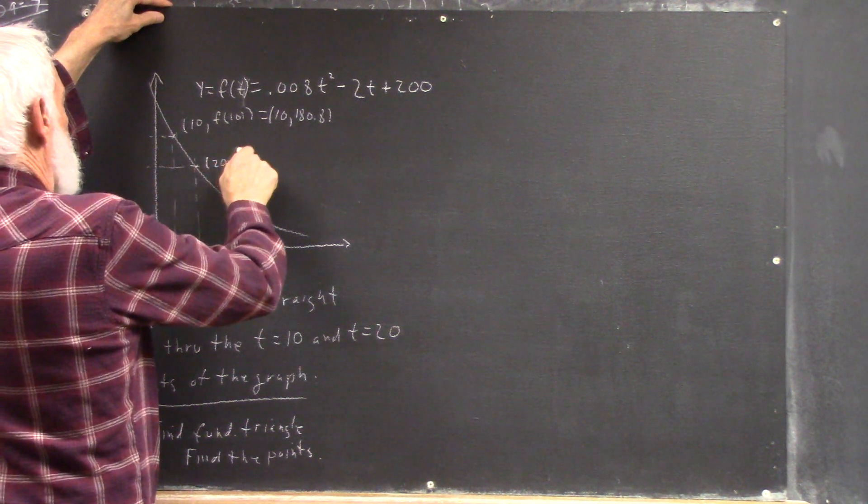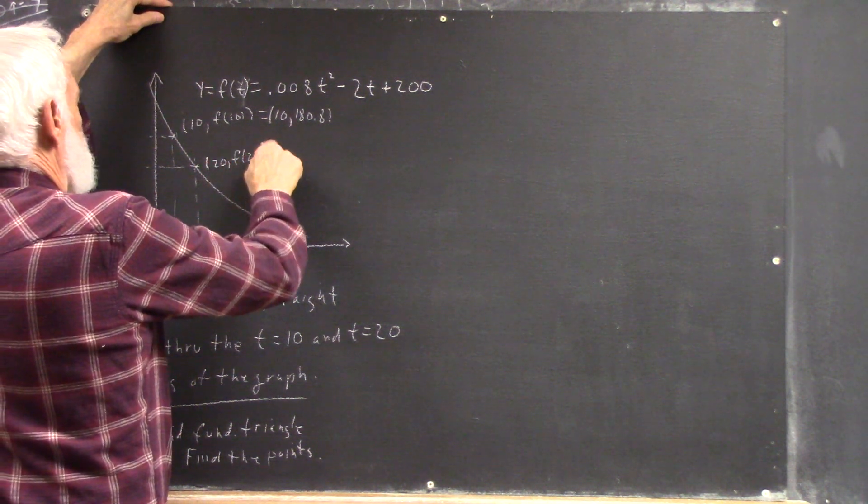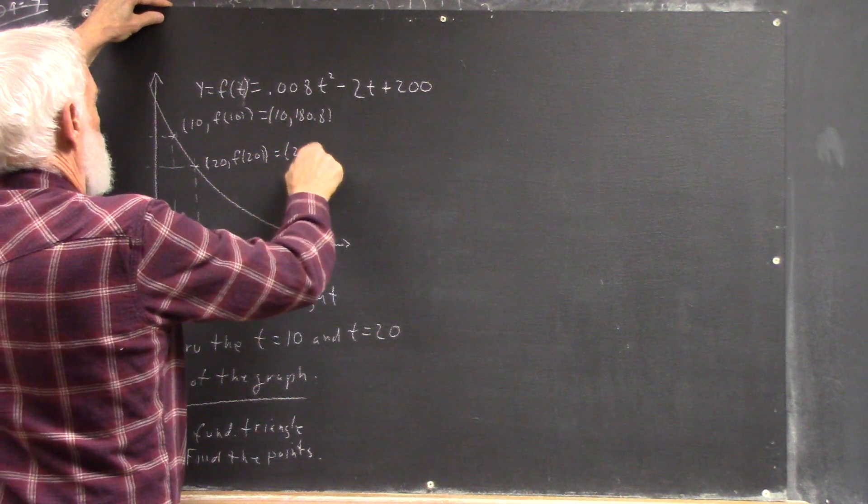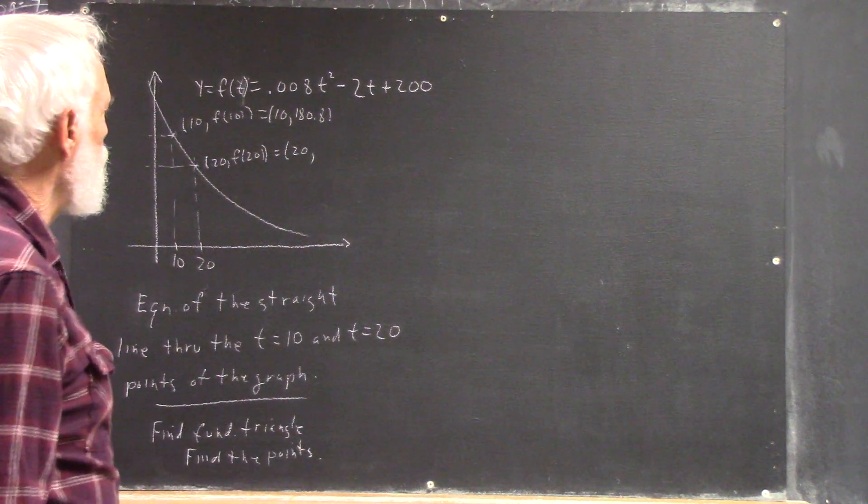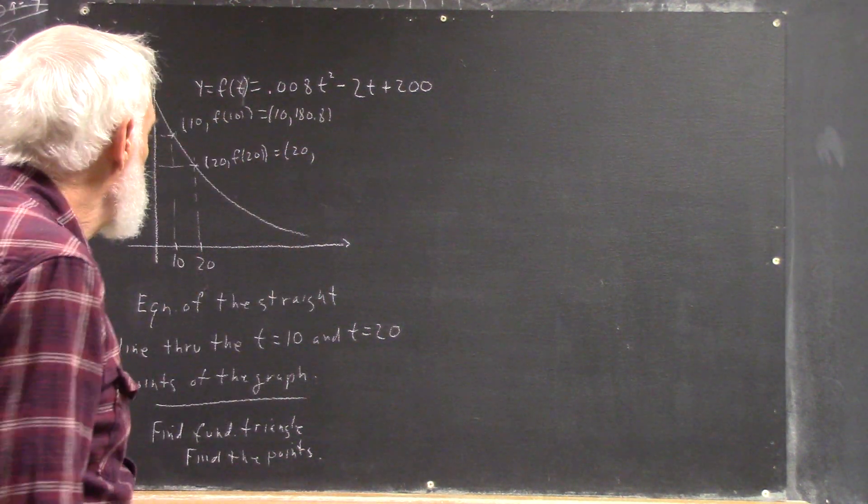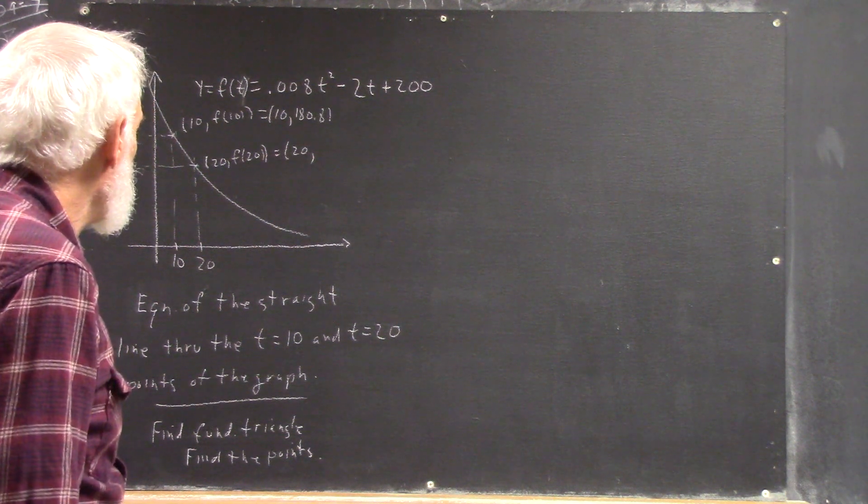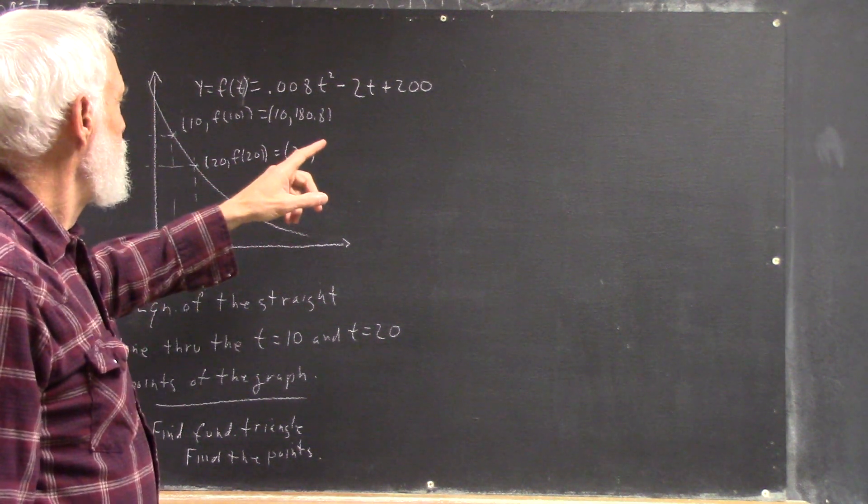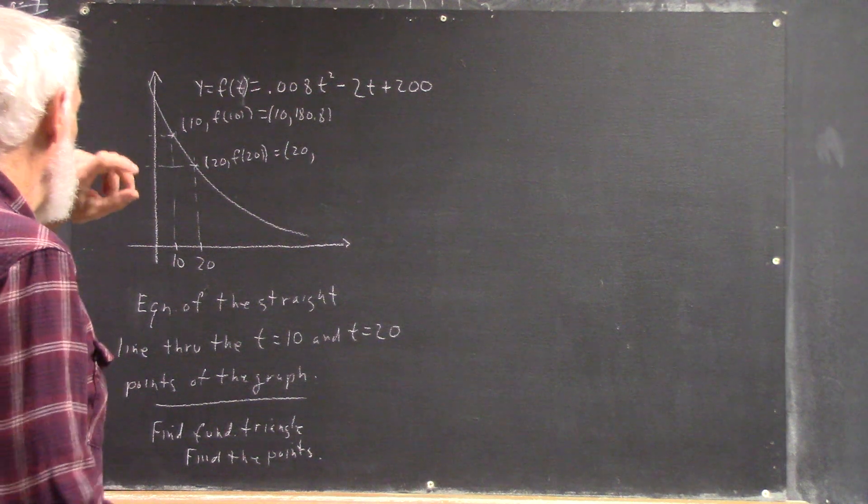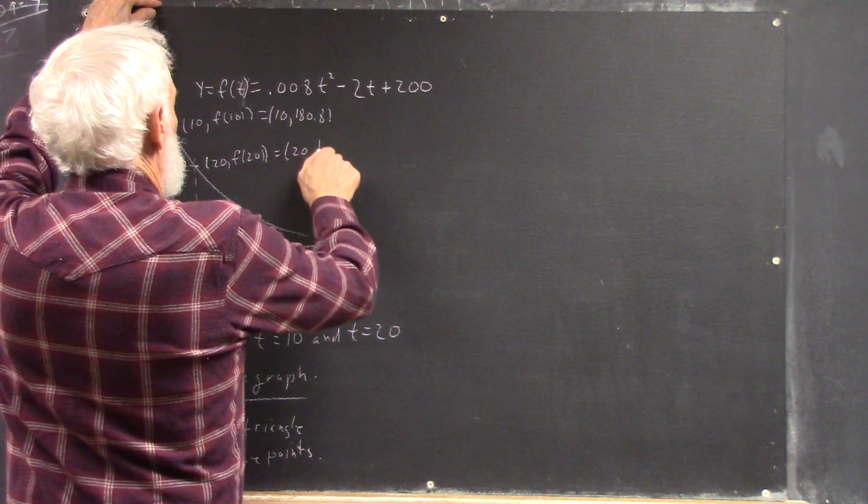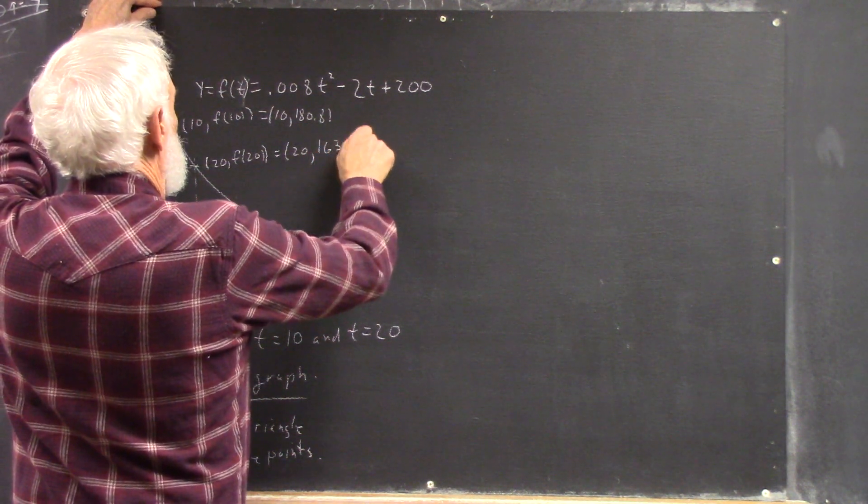And then we have the point (20, f(20)). That's 20. Now, 20 squared is 400. It's going to give us 3.2 minus 40 plus 200. So I believe that's going to be 163.2.